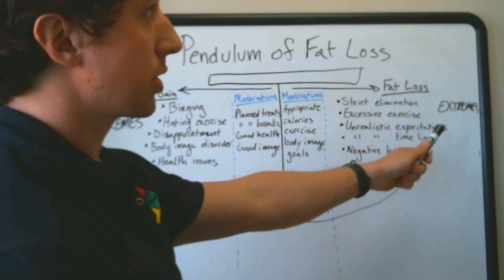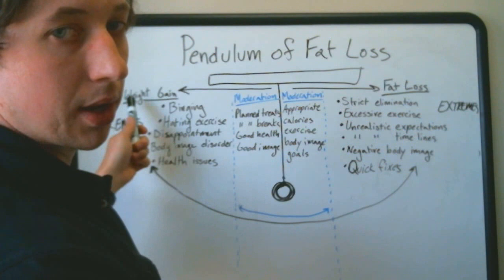Once we get further out toward extremes, what happens when the pendulum swings really far one way? It always swings back to the other.